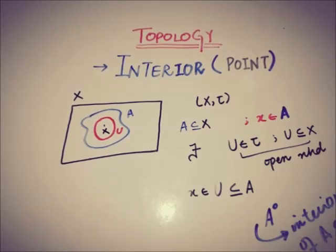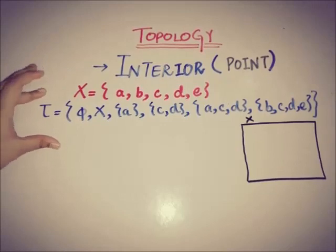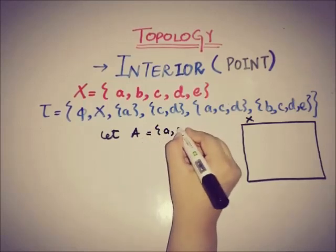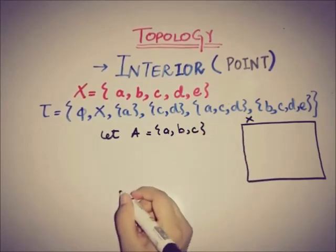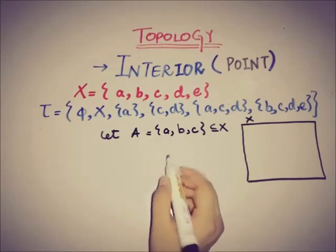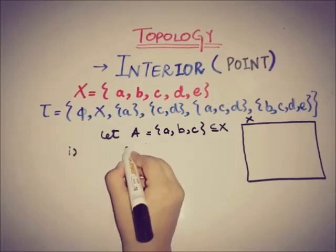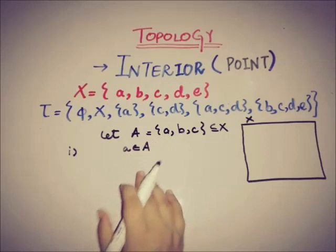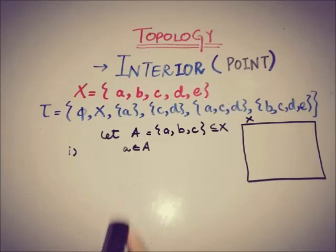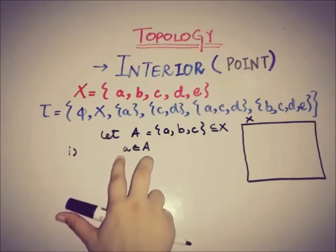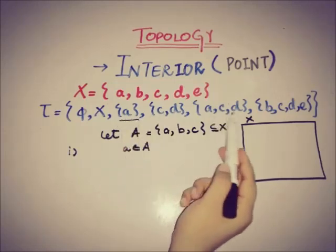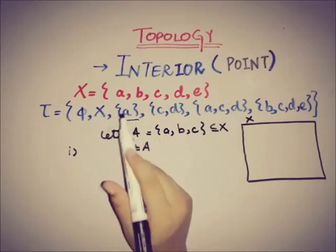Now let's see an example. This is the set X and the topology on X. Let's say there exists a subset {a, b, c}. We will check whether a, b, or c is an interior point. For a: a belongs to the set A, and we are checking whether a is an interior point of that set A or not. The condition for an interior point is that there exists an open neighborhood of that point. The open neighborhoods of a are {a}, {a,c,d}, and X.